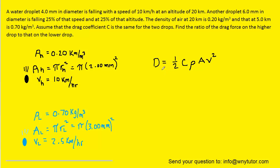And of course this equation holds true for both drops, so we can actually put subscripts of h to represent the equation for the higher drop, and then we can write the same equation for the lower drop. And then we look back at the question, which asks to find the ratio of the drag force on the higher drop to that on the lower drop.